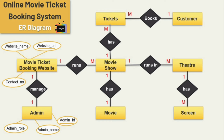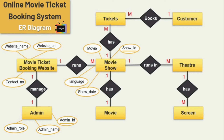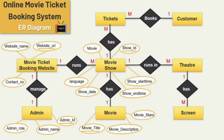Now let's see the attributes for the movie show entity. The first attribute is show ID, which is the key attribute; second is movie; third is movie language; next is show date; then show start and end time. For the movie entity, I have added three attributes: movie title, movie description, and movie stars — and movie title is the key attribute.